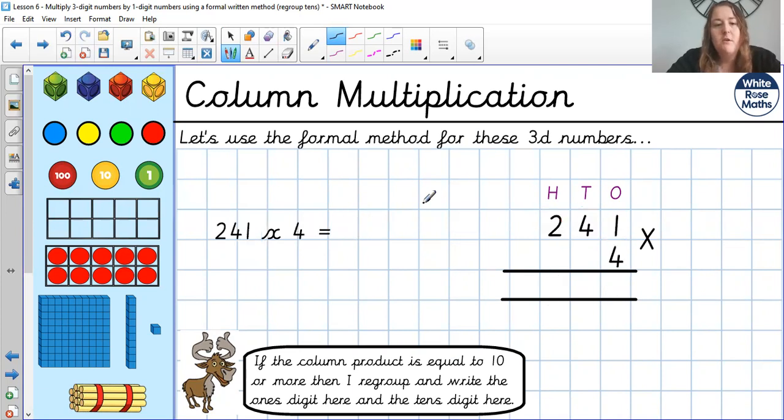Brilliant. Okay one more then. 241 multiplied by 4. So again I've made sure I've lined up those numbers correctly and I'm starting with my vertical 4 times 1. 4 times 1 is 4. Simple enough. Next one in the colour green. 4 times 4. So 4, 8, 12, 16. 6 in that tens column and 1 goes into the hundreds. And then finally in our blue colour we do 4 times 2. 4 times 2 is 8. Add one more down there is 9. So the number is 964.